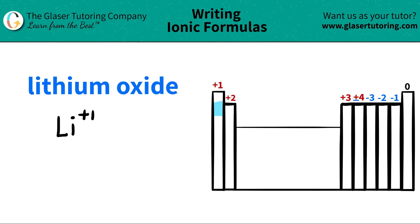Oxide comes from oxygen. This was a non-metal that got the IDE ending. So oxygen is right over here on our periodic table and oxygen is always a negative two charge. It gains two electrons.